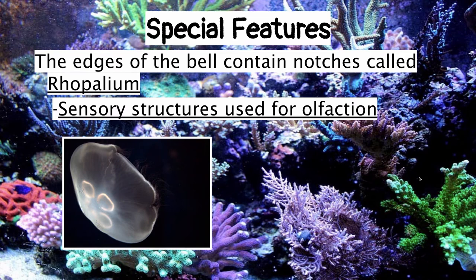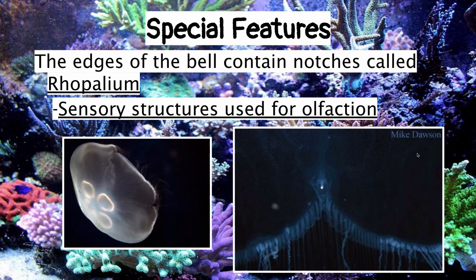A special feature seen in Scyphozoans is the rhopalium, which is an olfactory organ — meaning it's used to smell. At the edge of the bell, some species have rhopalium visible in little grooves. Zooming in, they can actually pick up the scent of certain fish swimming around them, helping them hunt for food by smelling their prey.